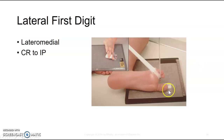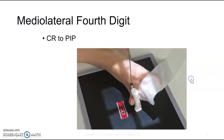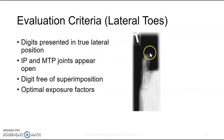For the lateral view, here's an example of a lateral great toe with the patient on their side, using either a tourniquet or some tape. This example uses gauze between the toes to make that lateral exposure. A lateral of the fourth toe uses a rolled-up gauze to separate it out.